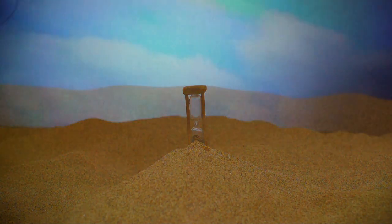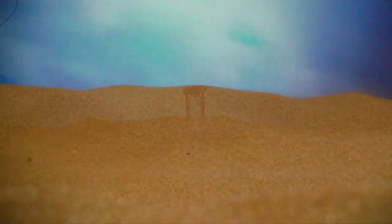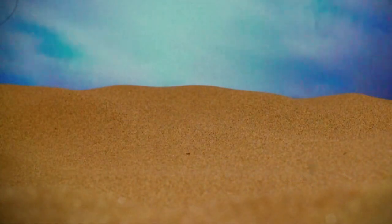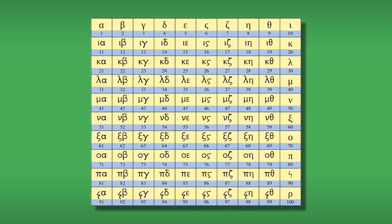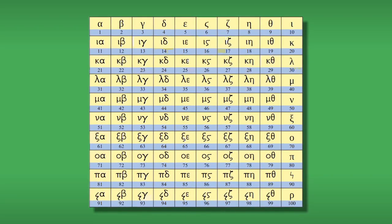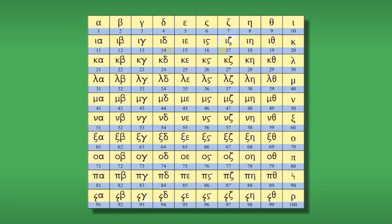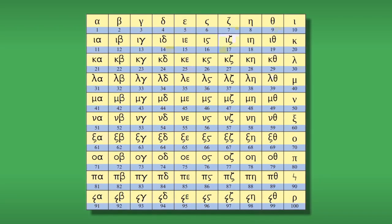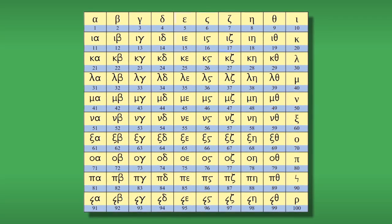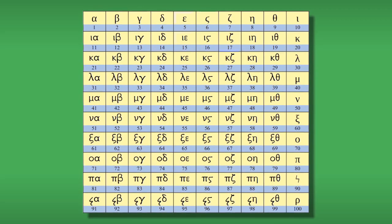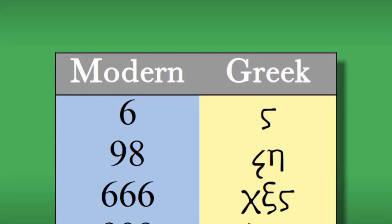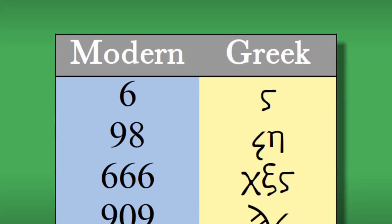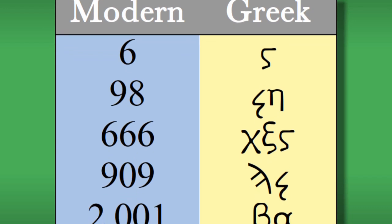The Greek number system was very clumsy — not as clumsy as Roman numerals, but certainly clumsy compared to our modern system. There was no good way of handling very large numbers.